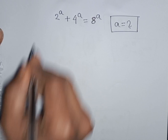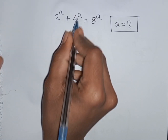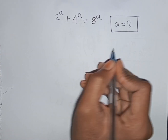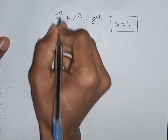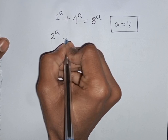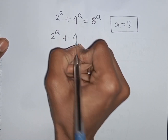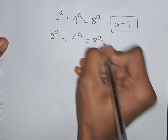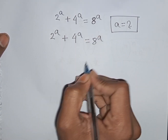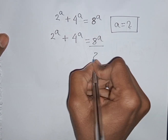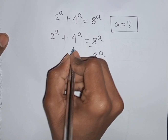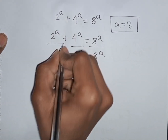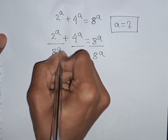How to solve 2^a + 4^a = 8^a. Find the value of a. We have 2^a + 4^a = 8^a. Now we divide both sides by 8^a — so divide by 8^a on the left and divide by 8^a on the right.